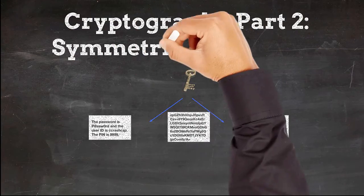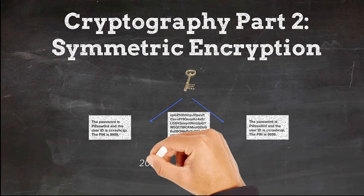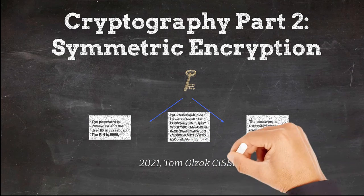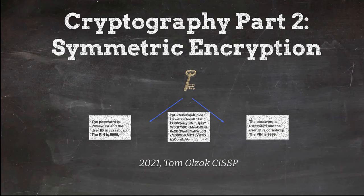Today's approaches to the cryptographic protection of information include symmetric and asymmetric encryption. In this lesson, I describe cryptographic entropy, how symmetric encryption achieves it, and the reason why it's not practical to crack AES.